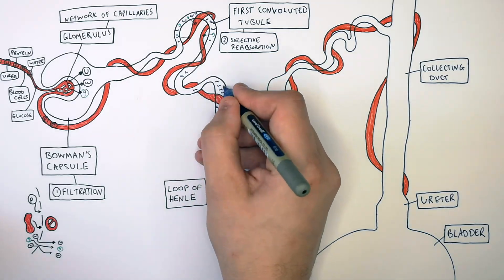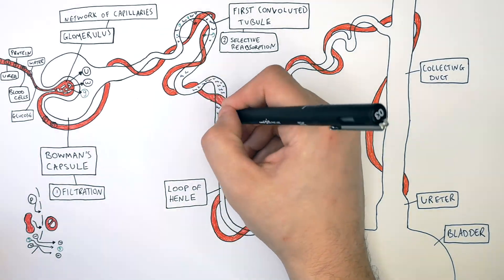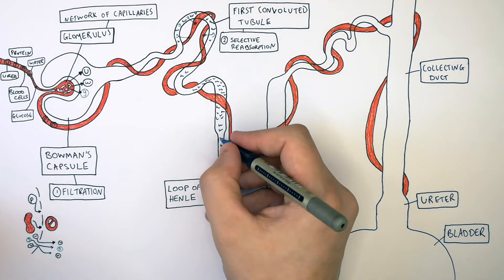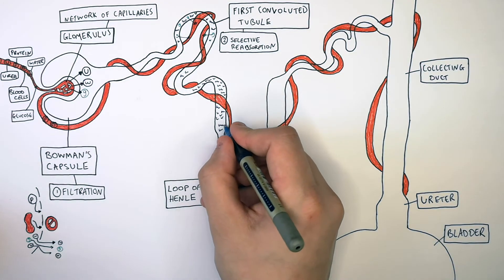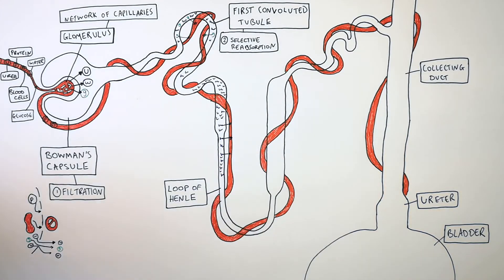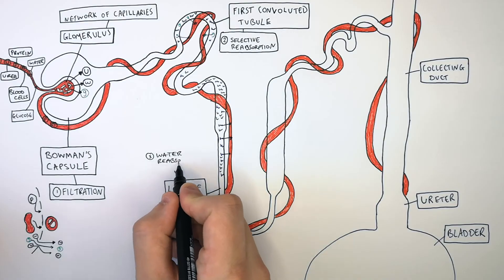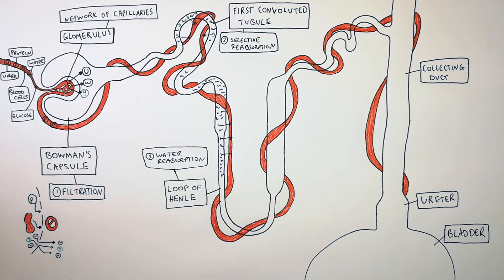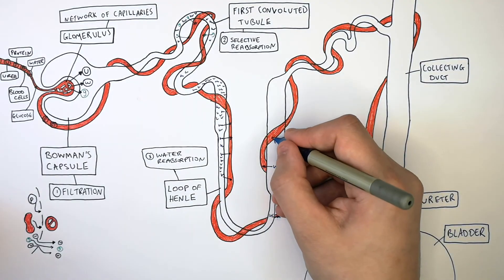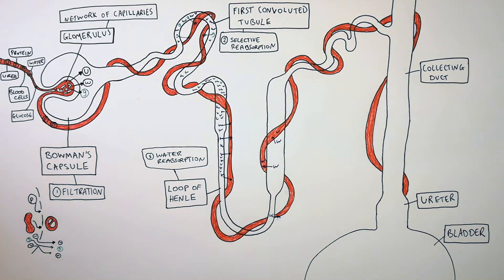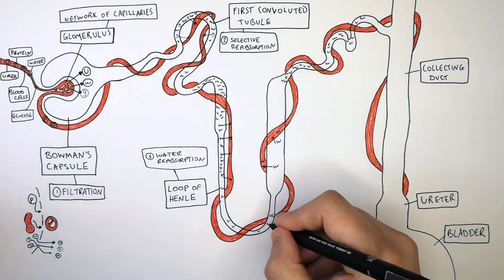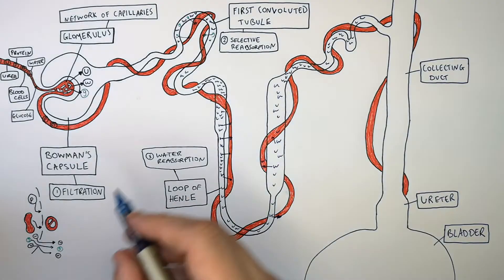Now we're going to look at what happens in the loop of Henle. Water and urea enter the loop of Henle. Water is reabsorbed back into the blood from the loop of Henle inside the nephron. Not all the water is reabsorbed; a lot of the water is going to enter the collecting duct.